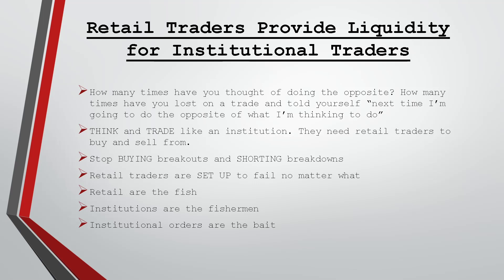Stop buying breakouts and stop shorting breakdowns — you're providing liquidity for institutions when you do that. For every buyer there's a seller, and for every seller there's a buyer. Think of retail traders as fish in the water; institutions are the fishermen casting bait. That bait is the institutional orders, and retail traders hungry to make money end up taking that bait, feeding right into the cycle.